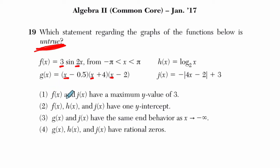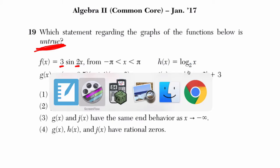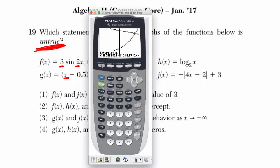F of x and j of x have a maximum y value of 3. Now you could plug both of these into the calculator, f of x, j of x, and find a maximum by hitting second trace. And I'll show you how to do that right now, but you don't need to, and I'll explain why. So here, I'm not going to do both, I'll just show one.